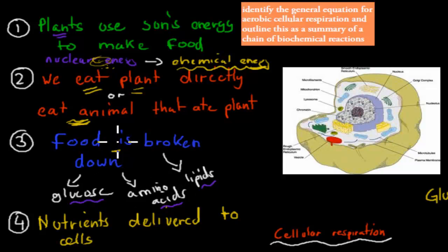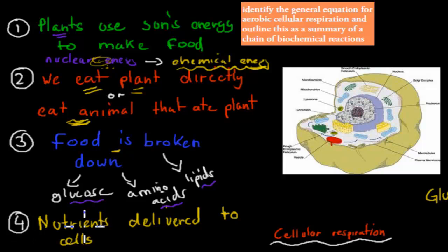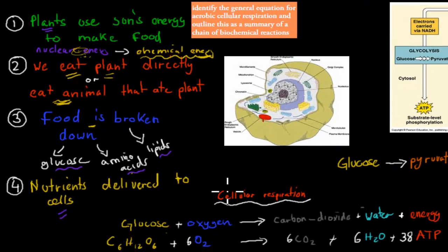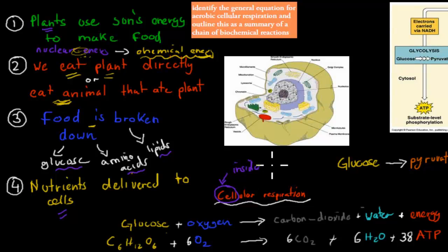This breakdown happens in the small intestine, where food is broken into smaller bits and then absorbed into the bloodstream. Step four is that nutrients are delivered to our cells. This is where cellular respiration comes in — cellular respiration happens inside cells, and it's the process we need to actually use the energy from glucose.